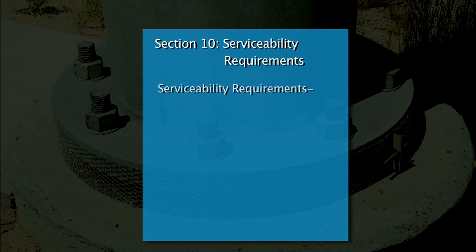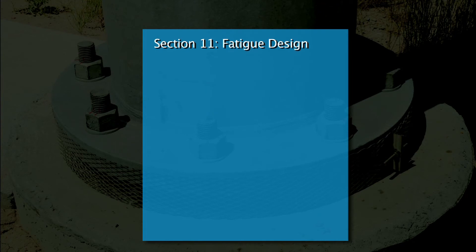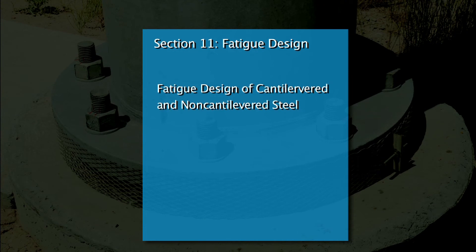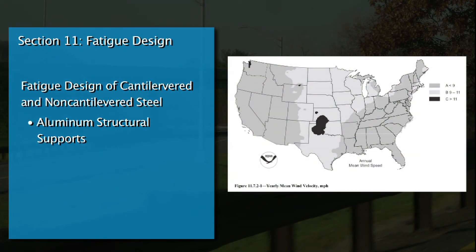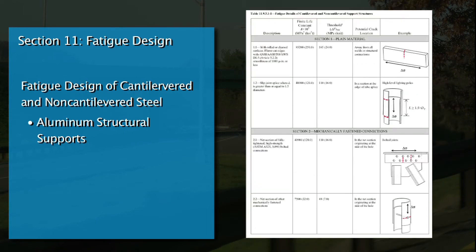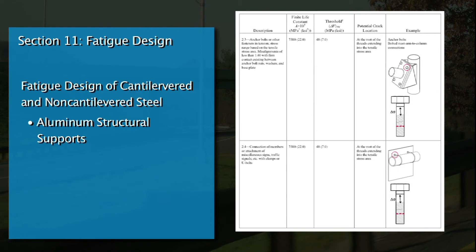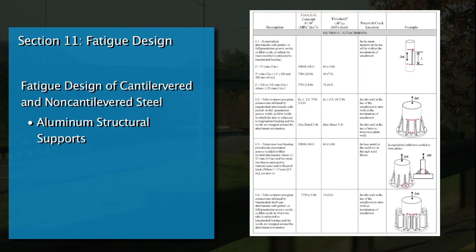Section 10, titled Serviceability Requirements, provides an overview of the serviceability requirements for support structures. Section 11, titled Fatigue Design, contains provisions for the fatigue design of cantilevered and non-cantilevered steel and aluminum structural supports. This section has also been expanded to allow design of support structures using nominal stress-based classifications of technical connection details, or using the alternative local stress-based and/or experimentally based methodologies. New tables have been included to determine the fatigue resistance of typical connection details and support structures of finite and infinite life designs, and the section now includes separated provisions for high-mast lighting towers.